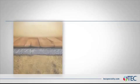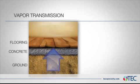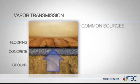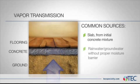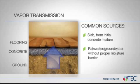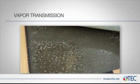One way moisture gets into your flooring is through vapor transmission. Vapor transmission is caused by moisture in the slab that evaporates toward the atmosphere. This can be from moisture that was there when the slab was first poured — typically, this moisture soaks into the slab in the form of rain or groundwater. The moisture moves through the slab and breaks down the adhesives, which warps and buckles the flooring.